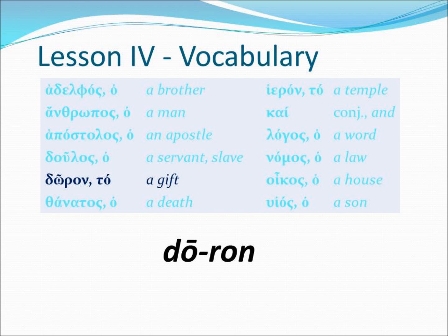The next word on our list is doron. Notice the article associated with doron is not ho, which is a masculine article, but it's the word to. To is a neuter gendered article. This tells us that doron has a gender of being neuter. Doron means 'a gift.'